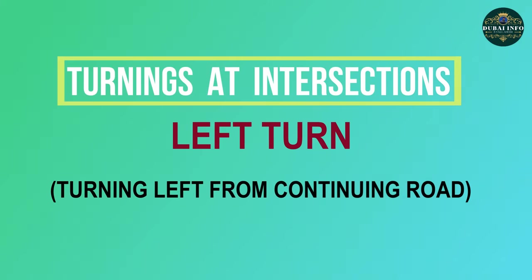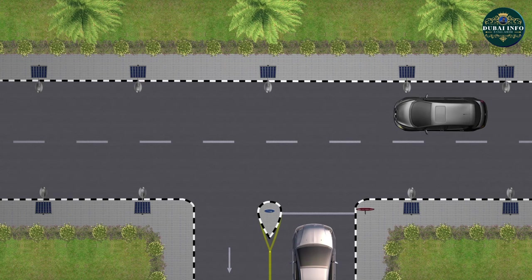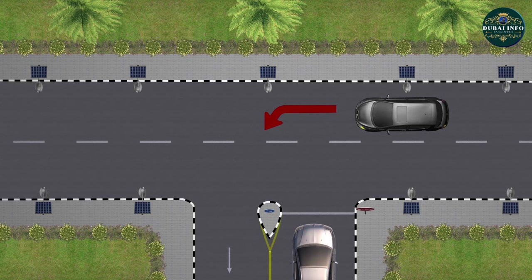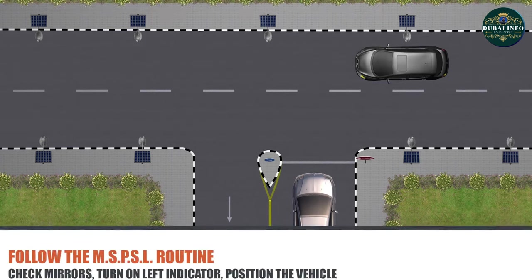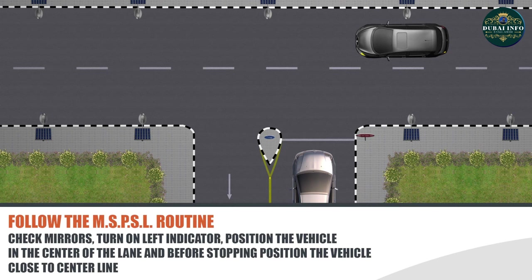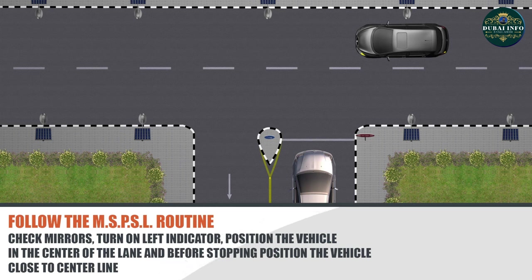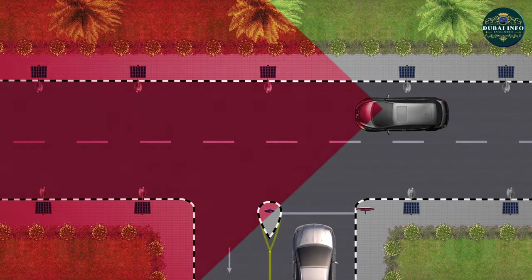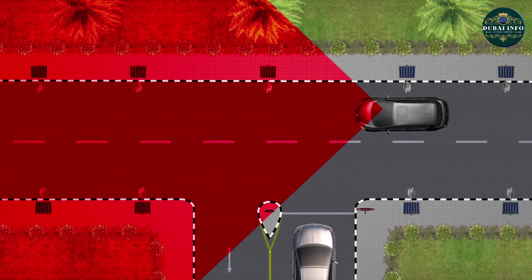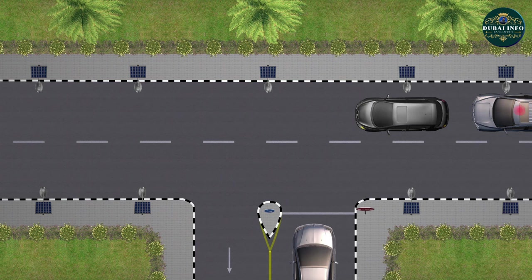To make a left turn from continuing road to a side road, plan early and locate the turn. While approaching, follow the MSPSL routine: check mirrors, turn on left indicator, position the vehicle in the centre of the lane, and before stopping, position the vehicle close to the centre line. Meanwhile, reduce the speed and look for the oncoming traffic, overtaking vehicles from behind, or other possible hazards.